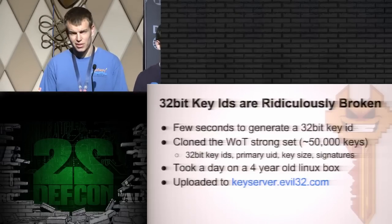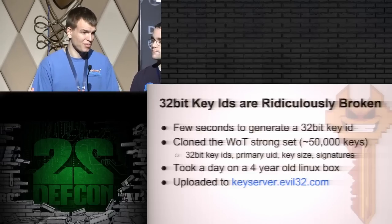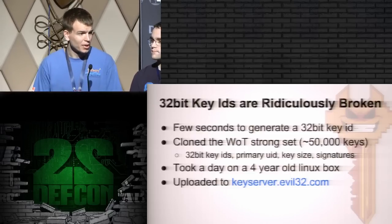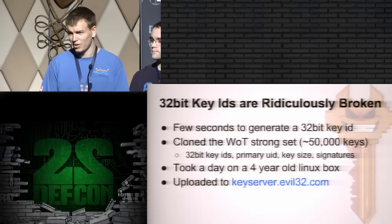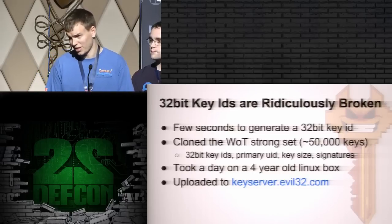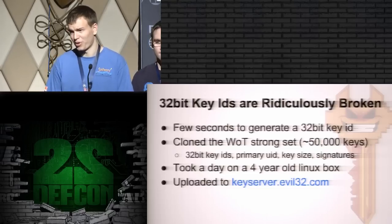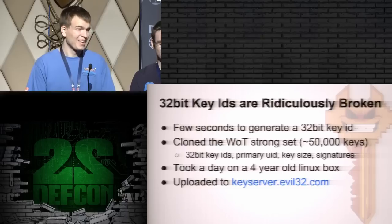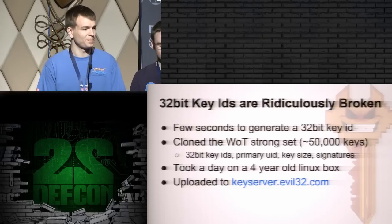What are the implications? 32-bit key IDs are ridiculously broken — they've been broken for some time. You can do this on a CPU, but on a GPU with our software it takes a few seconds. To demonstrate how easy this is, we cloned the entire web of trust strong set — about 50,000 keys — in one day on a four-year-old Bitcoin miner. You can check out our cloned key server at keyserver.evil32.com.